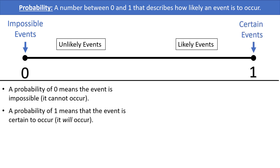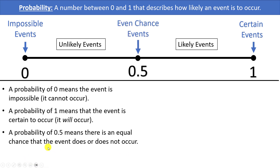A probability of 1 means that the event is certain to occur. For example, if you're shooting two free throws, the chance that you make either 0, 1, or 2 of them is 1 — you are certain to end up with one of those outcomes. Similarly, the chance that tomorrow it either does or does not rain is 1, because one of those two things must happen.